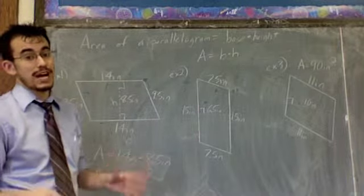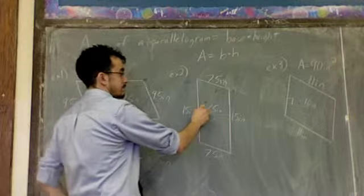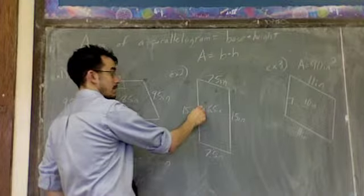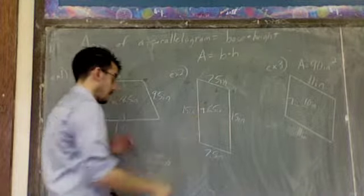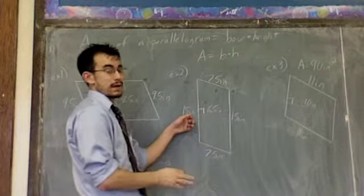The base is whichever side the right angle is connected to. So here's my right angle. Well, it's sitting on this side. So remember here, the bottom was the base, but here now it's the side. The base is not necessarily the bottom.